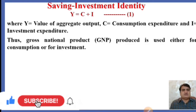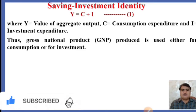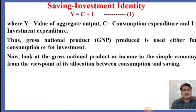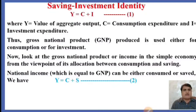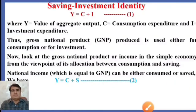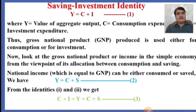Thus, gross national product (GNP) produced is used either for consumption or for investment. Now looking at GNP or income from the viewpoint of its allocation between consumption and savings: national income, which equals GNP, can be either consumed or saved. So output equals consumption plus savings — Y = C + S. This is the second identity we have derived.